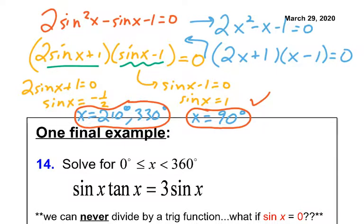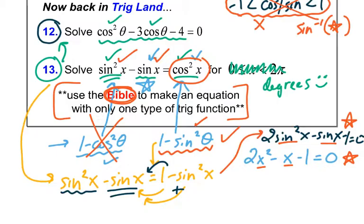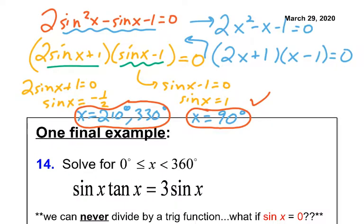So again, to recap, what we did first, guys, is we noticed that there were not all the same trig in this original problem. We were kind of stuck because there were sines and there were cosines. So we used our friend, the Bible, or we used Pythagorean equations to help us switch one trig into another one. And we picked the right one. Once we did that, we could just factor using our factoring skills and solving. And there's number 13.